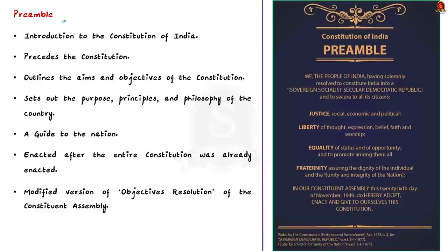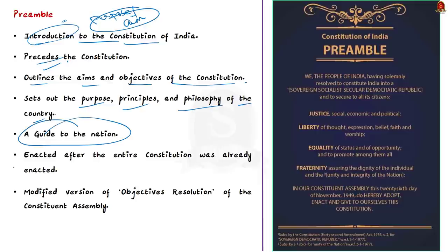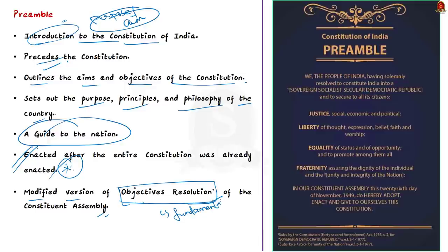The literal meaning of the word preamble is an introductory part that states the purpose and aims of a document or a statute. Similarly, the preamble to the Constitution of India is an introduction to our constitution. It precedes the constitution, outlines its aims and objectives, and sets out the purpose, principles, and philosophy of the country. It is a guide to the nation. Note that the preamble was enacted after the entire constitution was already enacted. The present preamble is the modified version of the document called the Objective Resolution of the Constituent Assembly, which was unanimously adopted in 1947.